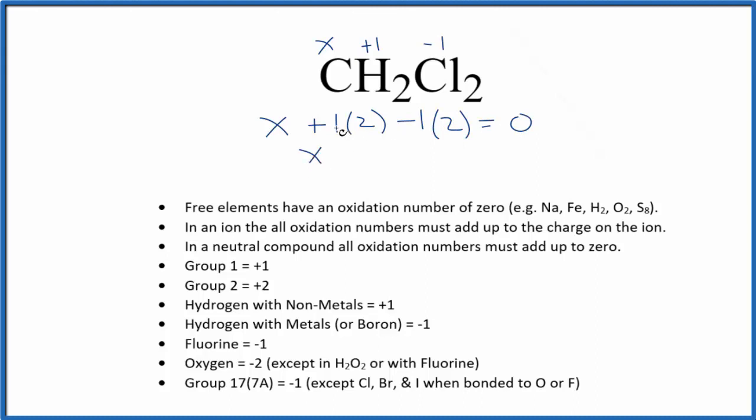So X, we have a plus two and a minus two. That's zero. So X equals zero. So the oxidation number on the carbon in CH2Cl2, that's going to be zero.